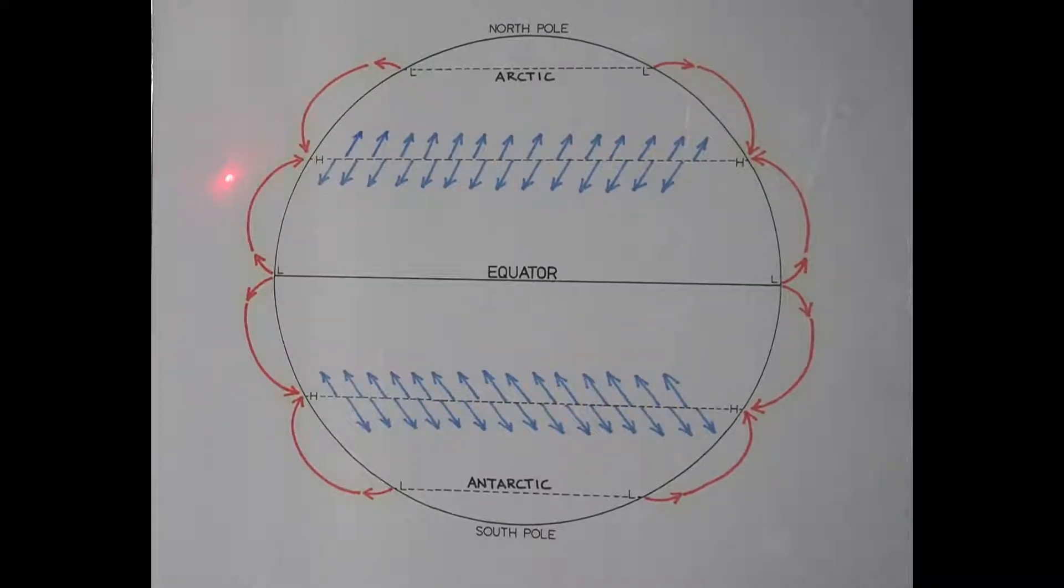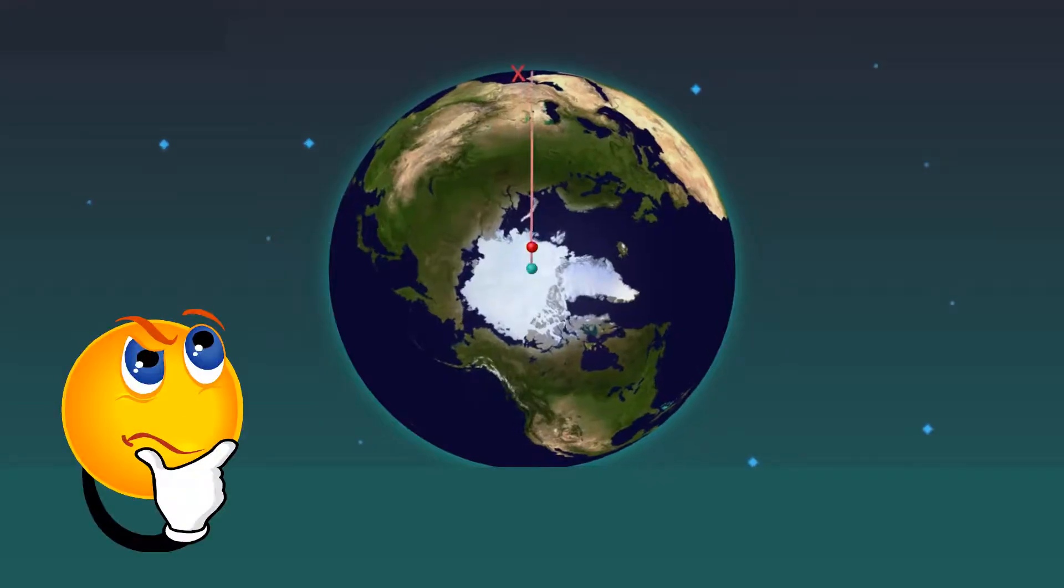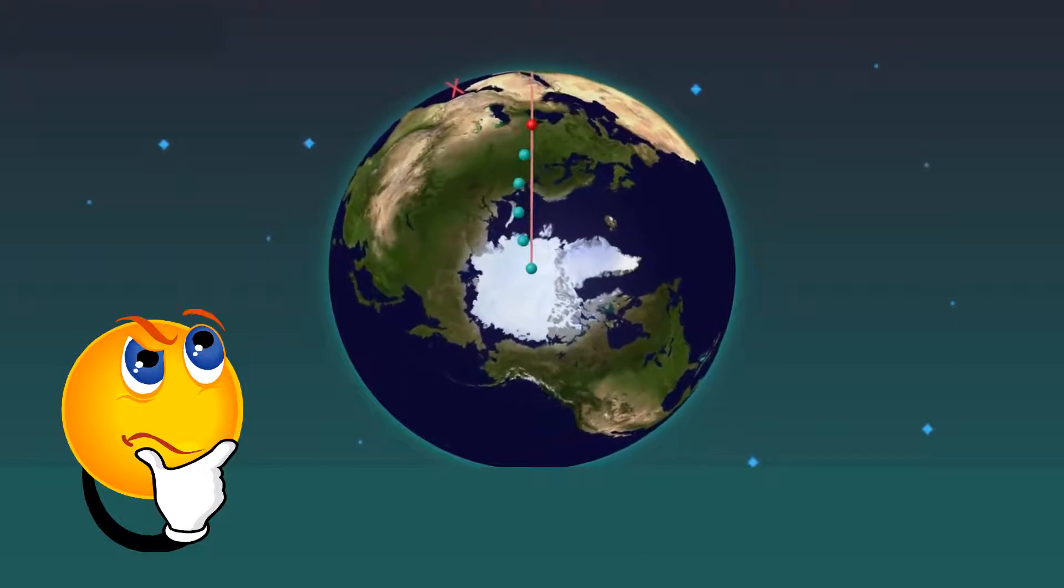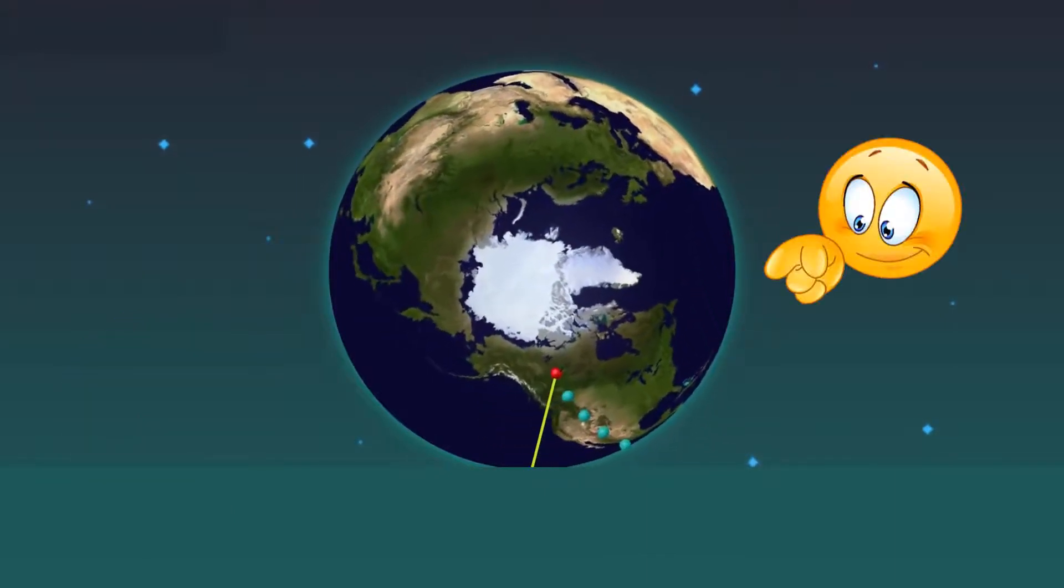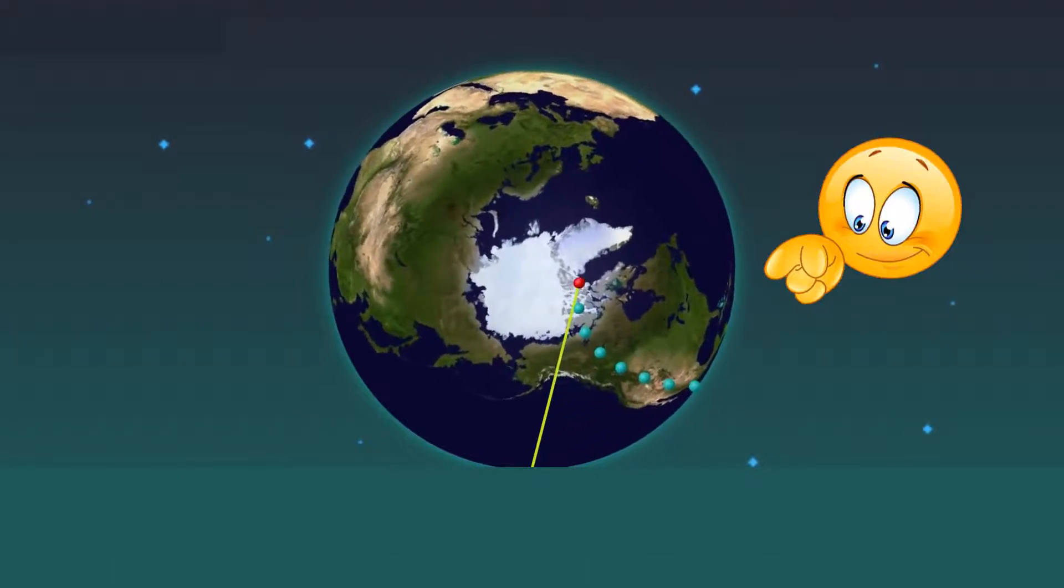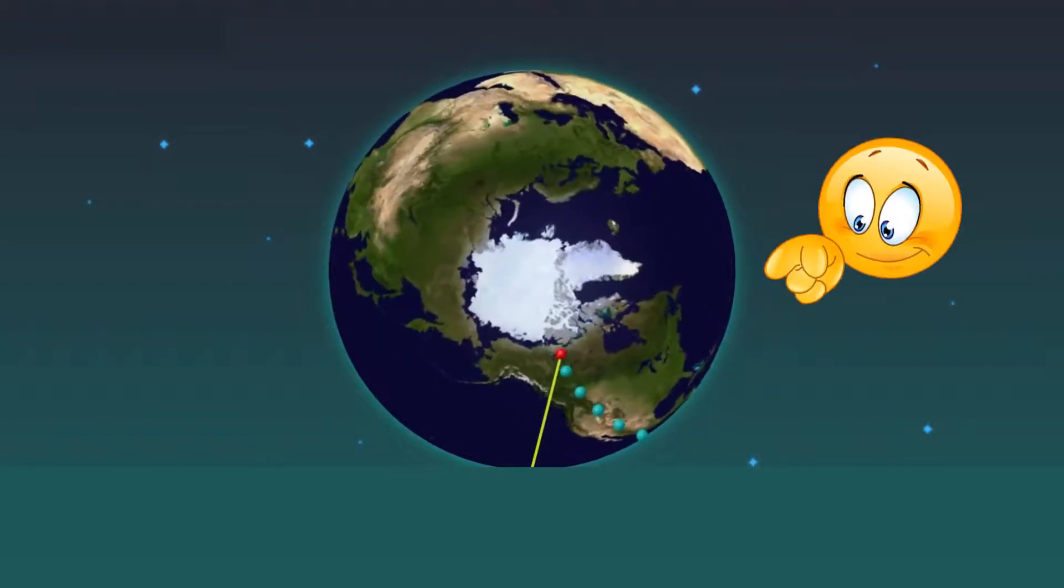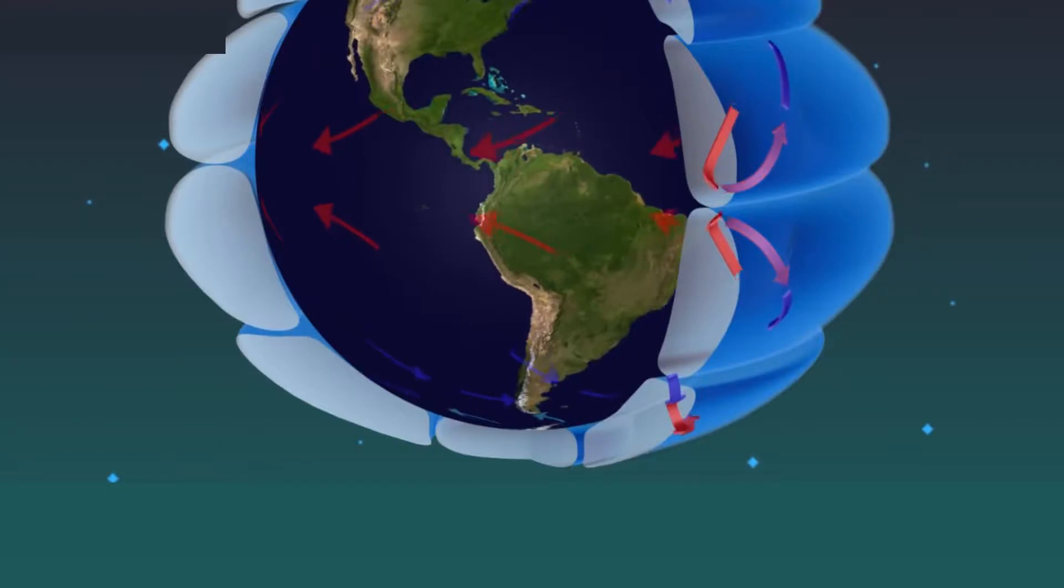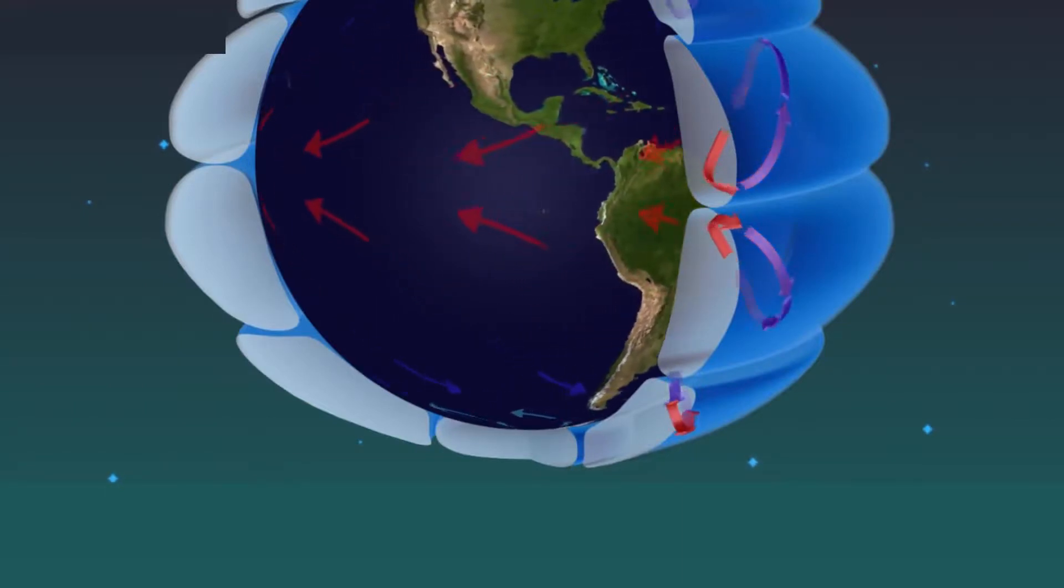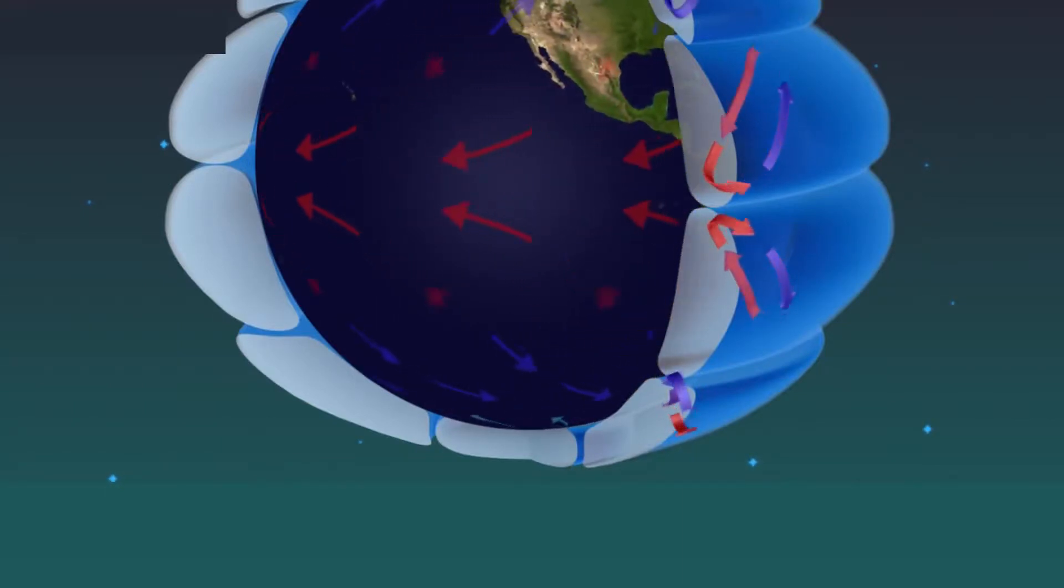So from our demonstration we have figured out why the arrows are slanting. It is because the Earth is rotating round on its axis, so the winds don't go in a straight direction but the direction that we have seen here, because the Earth is always rotating around on its axis.